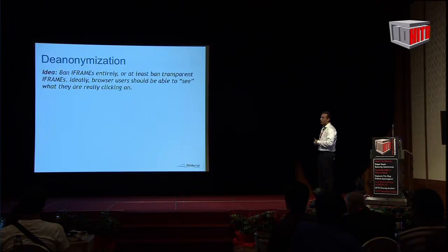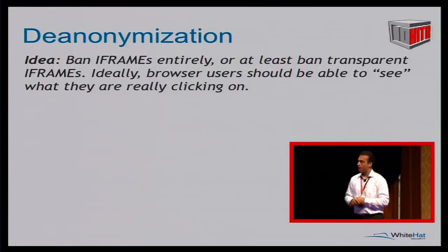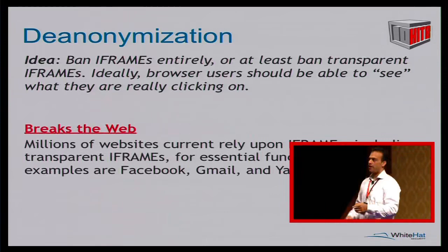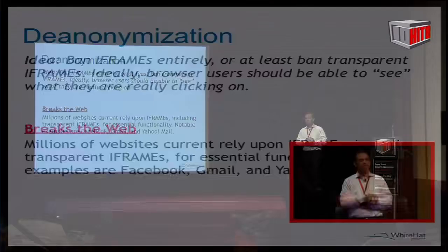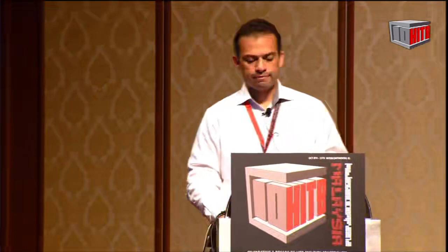To fix de-anonymization the way I described it, you have to fix clickjacking. One way is to ban iframes entirely or at least ban transparent iframes — ideally browser users should be able to see what they are actually clicking on. The problem is it breaks the web. Millions of websites rely on iframes, including transparent iframes, for essential functionality. Notable examples are Facebook, Gmail, and Yahoo Mail. Breaking that functionality would break those services, and the users and browser vendors would not like that. So that is a complete non-starter too — we live with that risk.